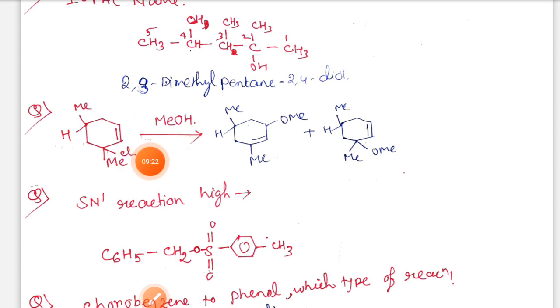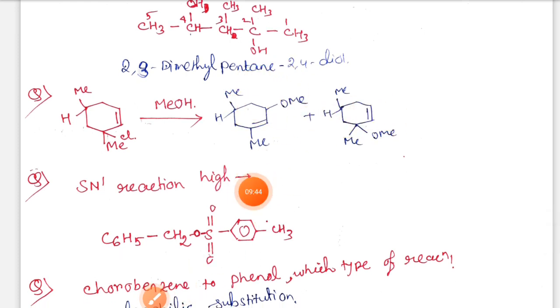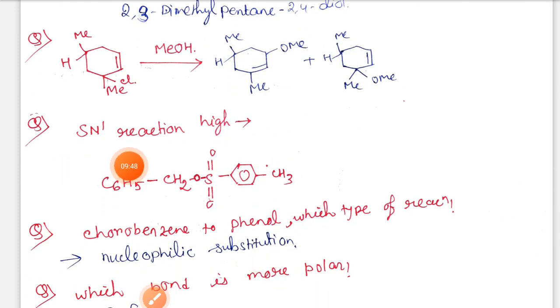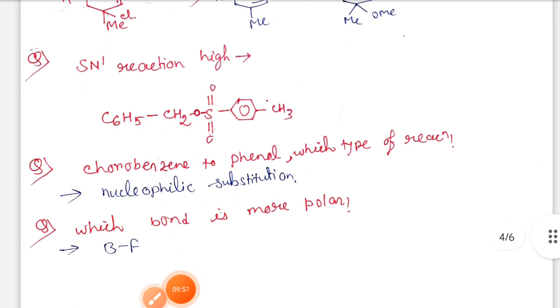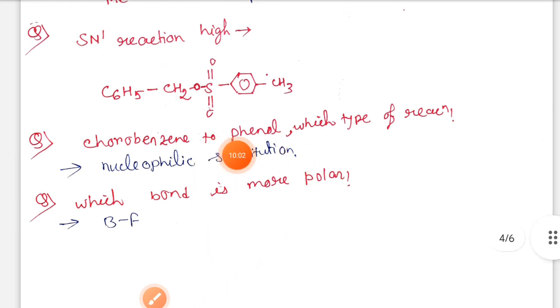Next, this structure is given with a leaving group attached. If we give SN2 reaction, this product is formed. But if we give nucleophile to this position, the double bond forms here and Cl is released, so two products are formed. SN1 reaction is high in this case because this is an OTs group and benzyl cation is formed.